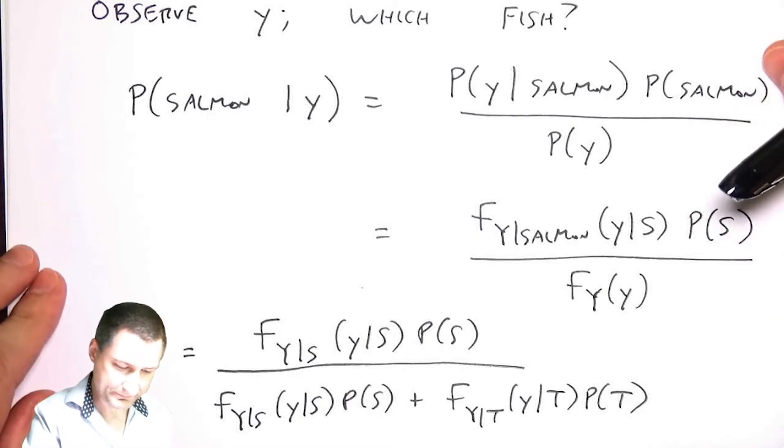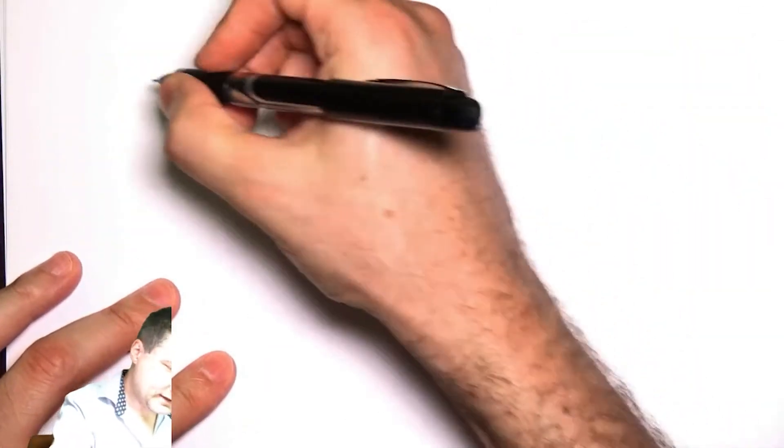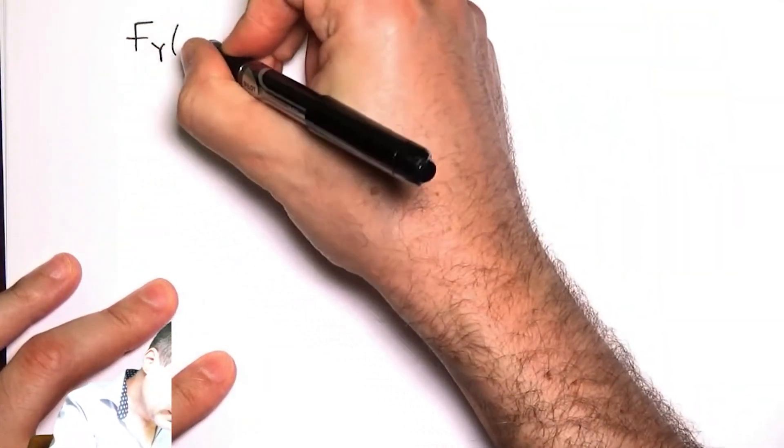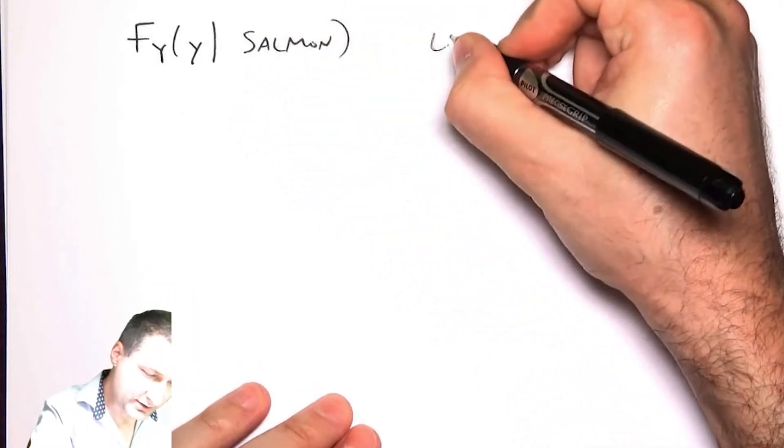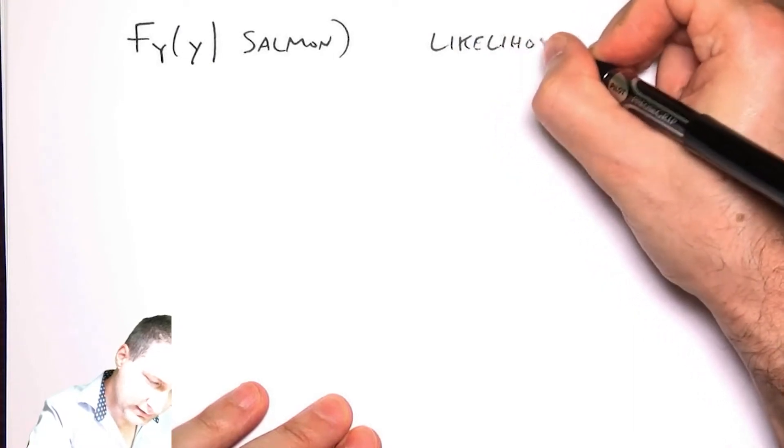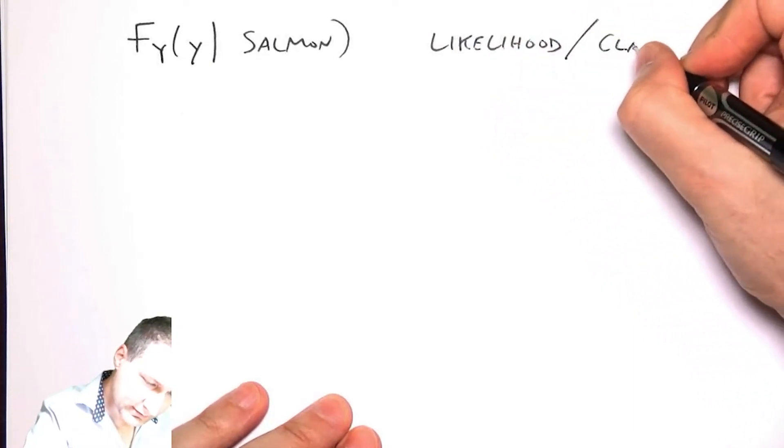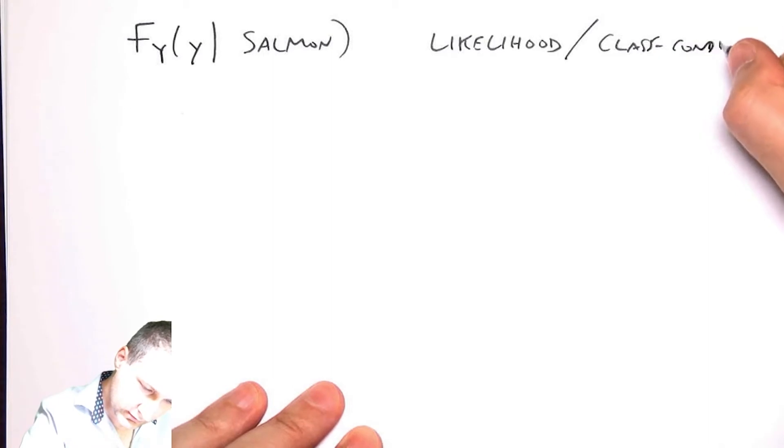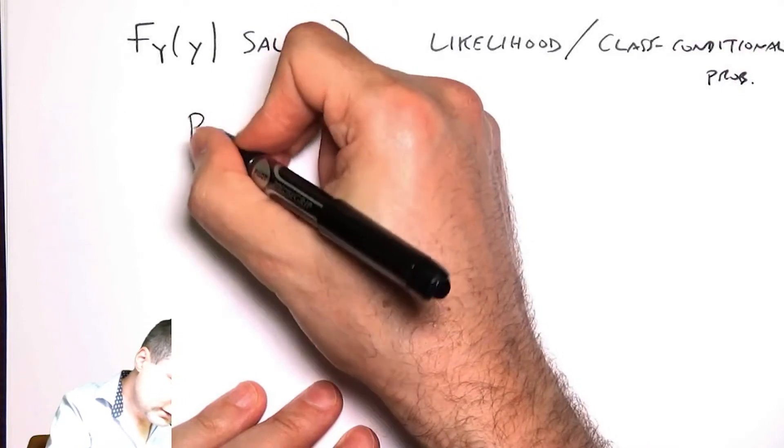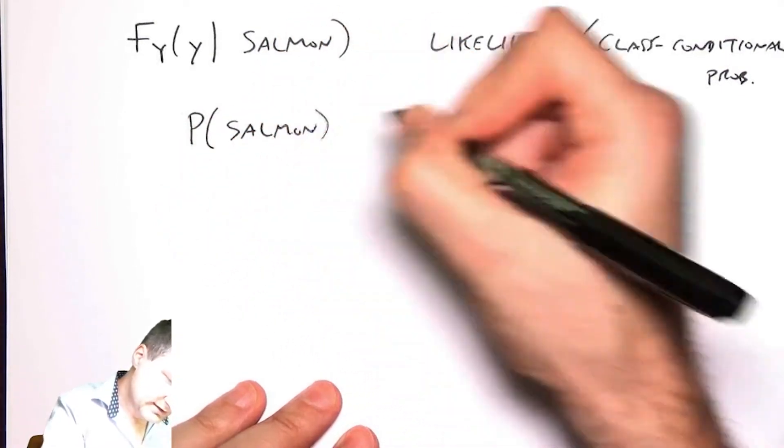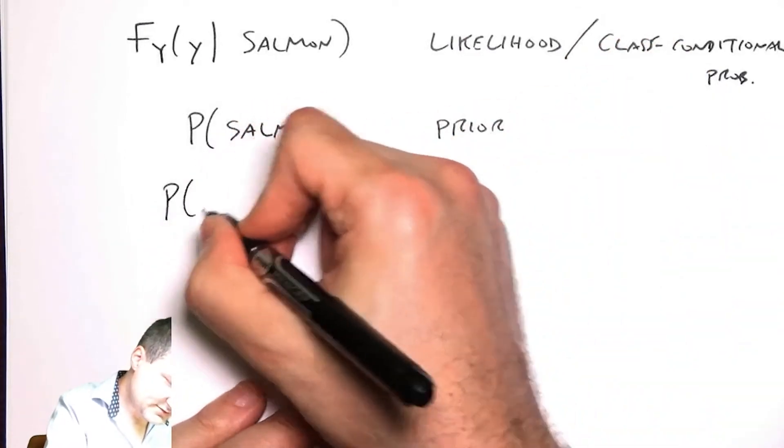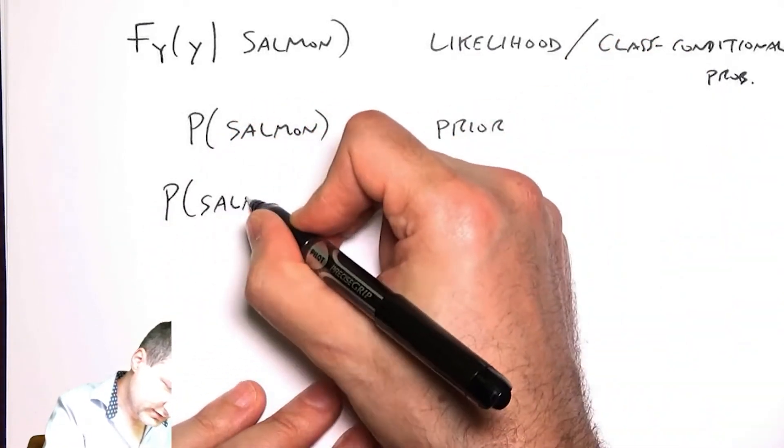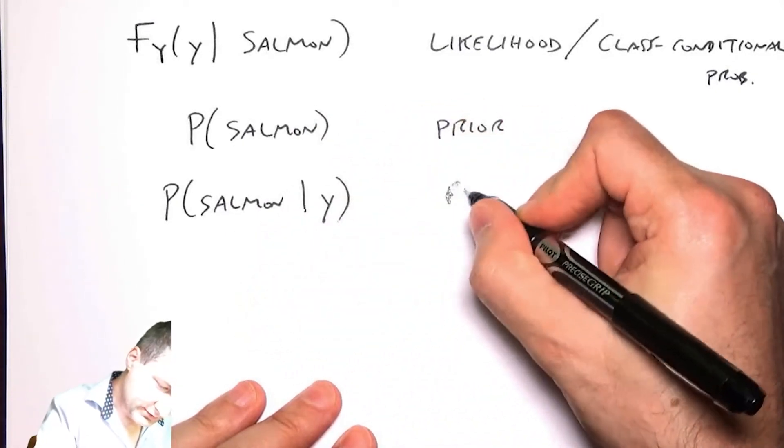Let me define some terminology. This guy here, F_Y(y|salmon), is the class conditional probability or sometimes called the likelihood. This probability of salmon is called the prior, and this number, probability of salmon given y, is called the posterior.